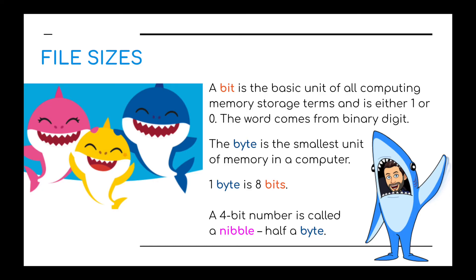I use in class the analogy of Baby Shark. A bit is the basic unit of all computing memory storage, and it can either be a one or a zero — that's Baby Shark. The next one up, Daddy Shark, is eight bits, which is called a byte. One byte equals eight bits. And in between, Mummy Shark, is half way between a bit and a byte — four bits of information — called a nibble.